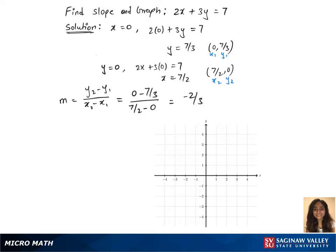Now let's plot those two points on the graph. 0, 7 over 3 lies there. And our next point, 7 over 2 comma 0 is there. And that's our line graph for the given equation.